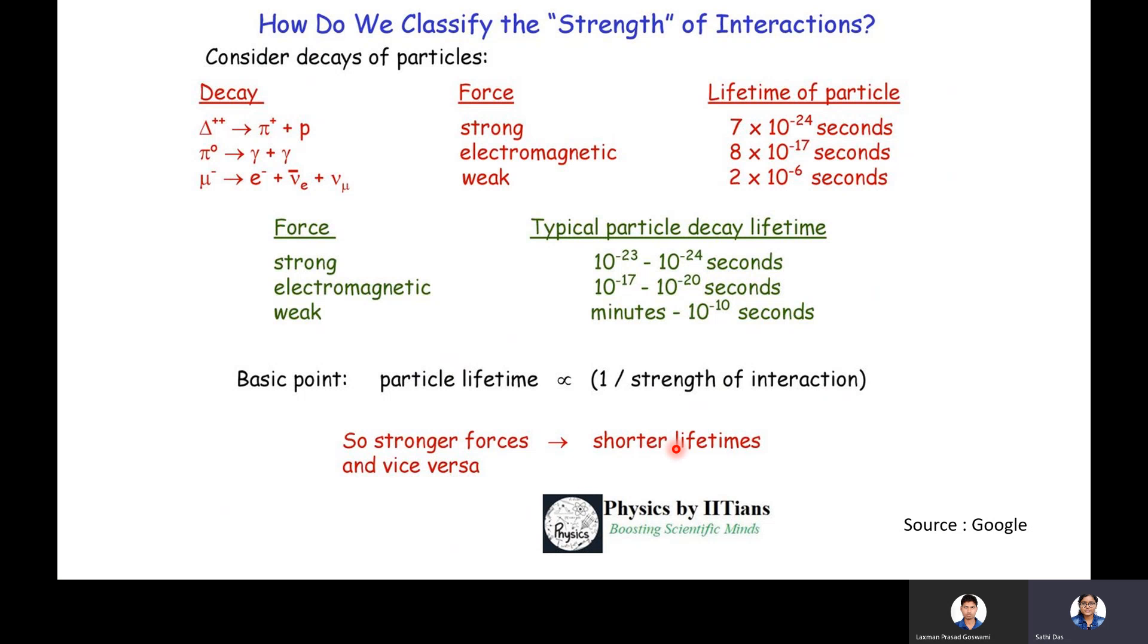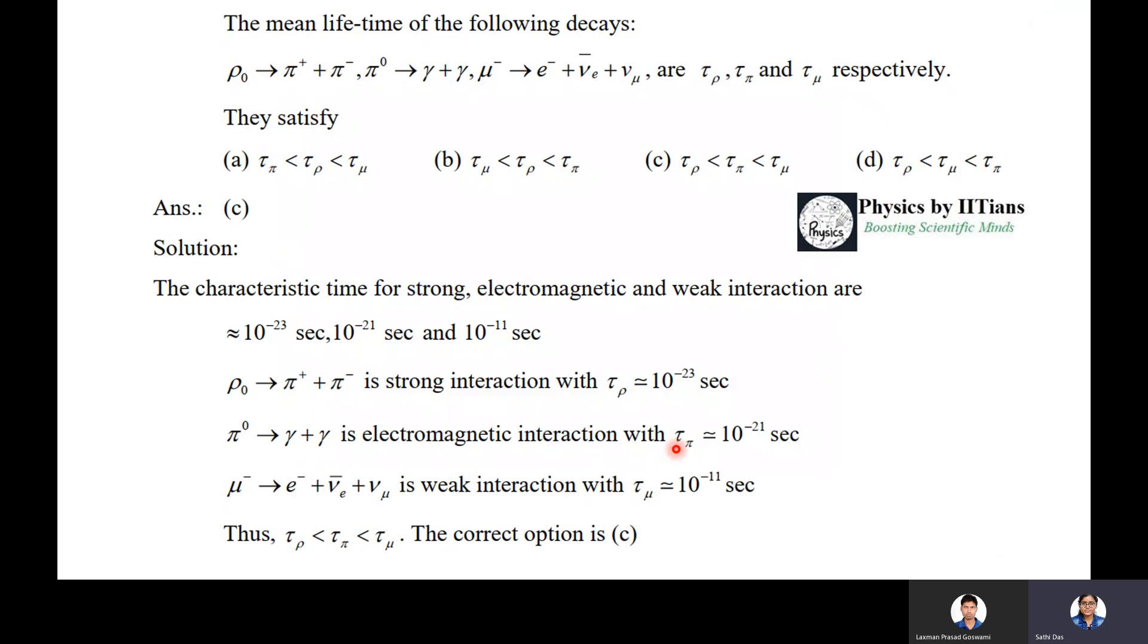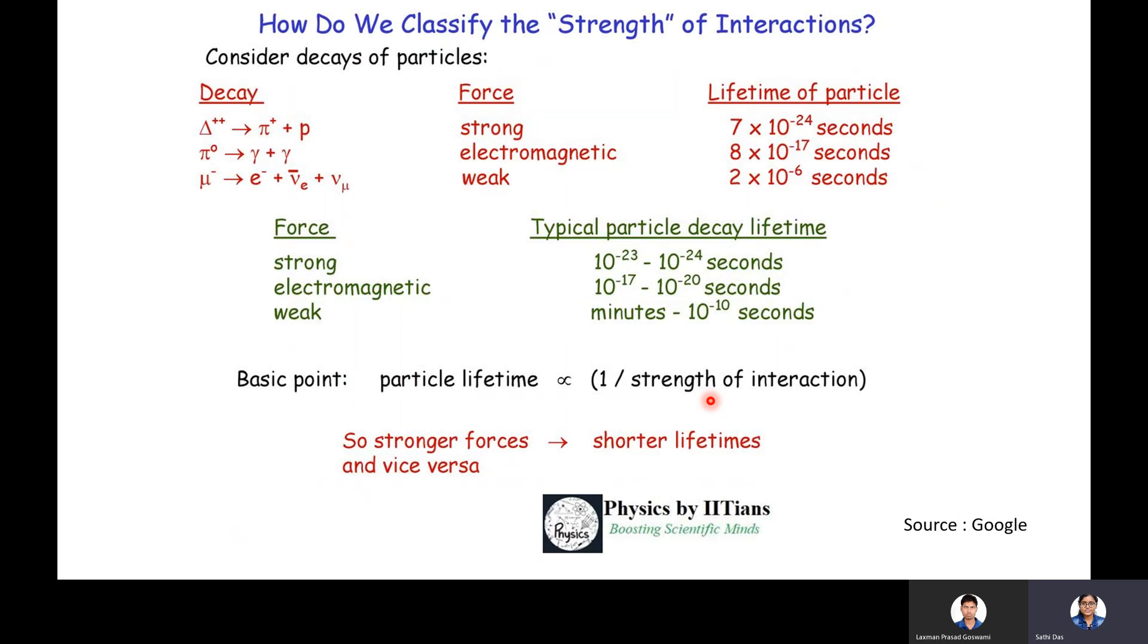So option C, that is τ_rho is less than τ_pi is less than τ_mu, this is the correct option. From this kind of equation or this kind of interaction, you should know which are kind of strong interaction, electromagnetic interaction, weak interaction. From there, you can find out the exact answer.